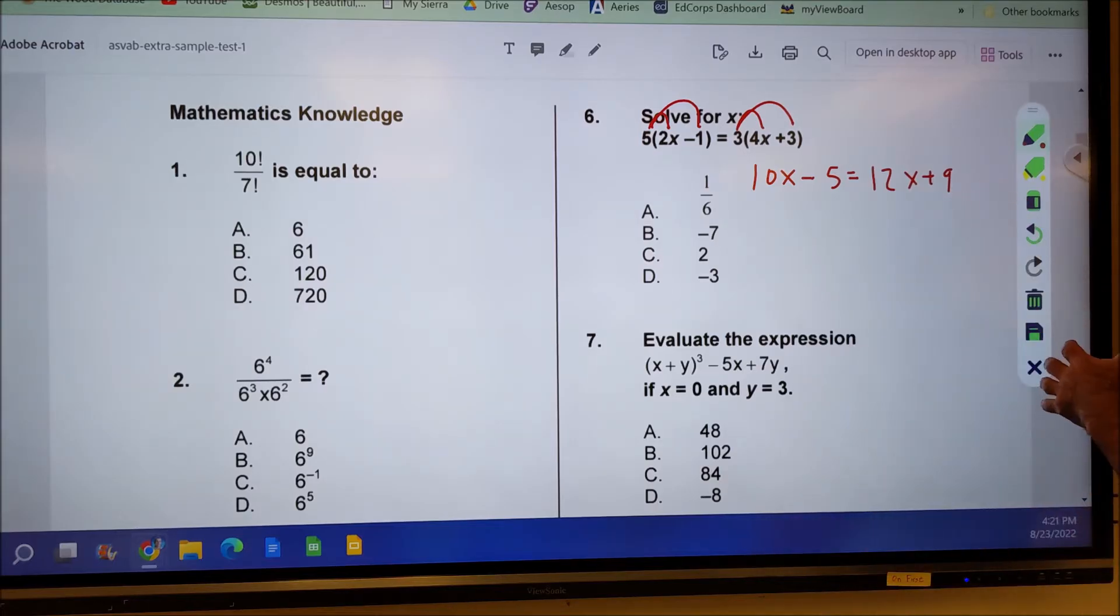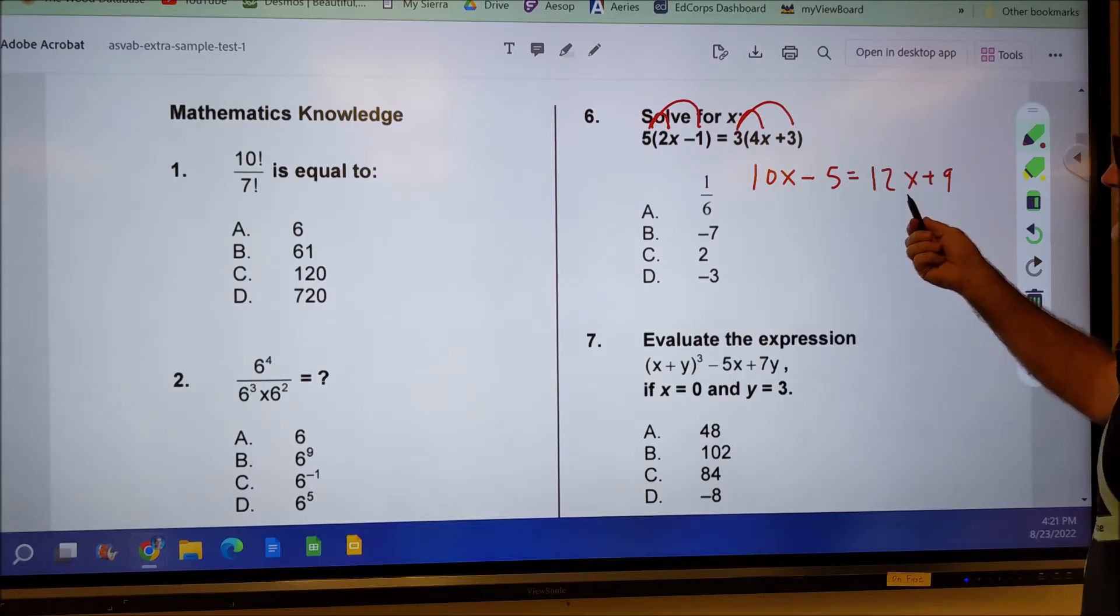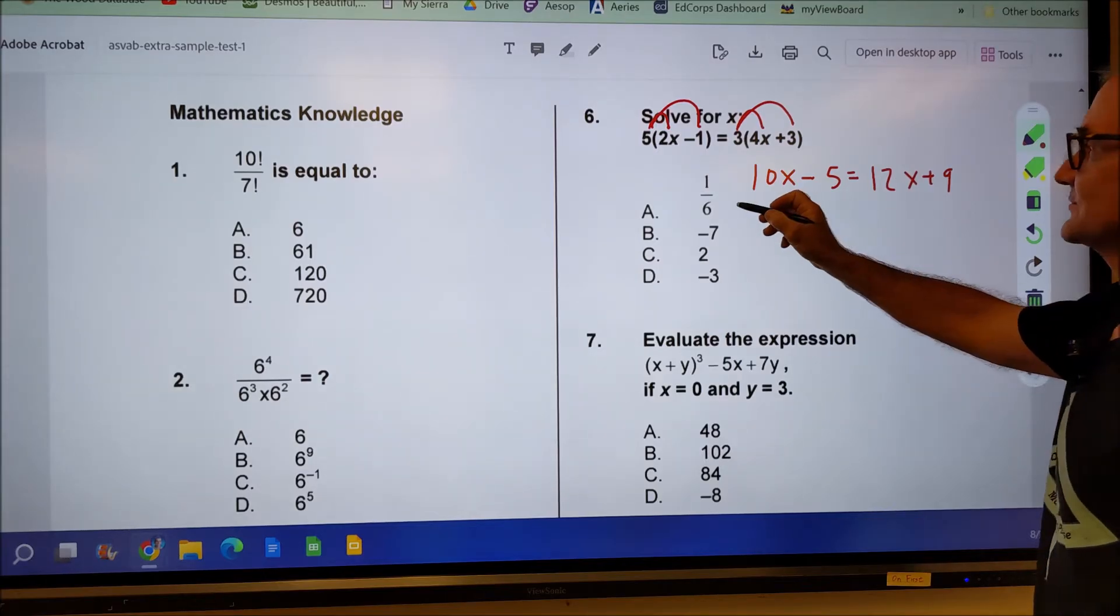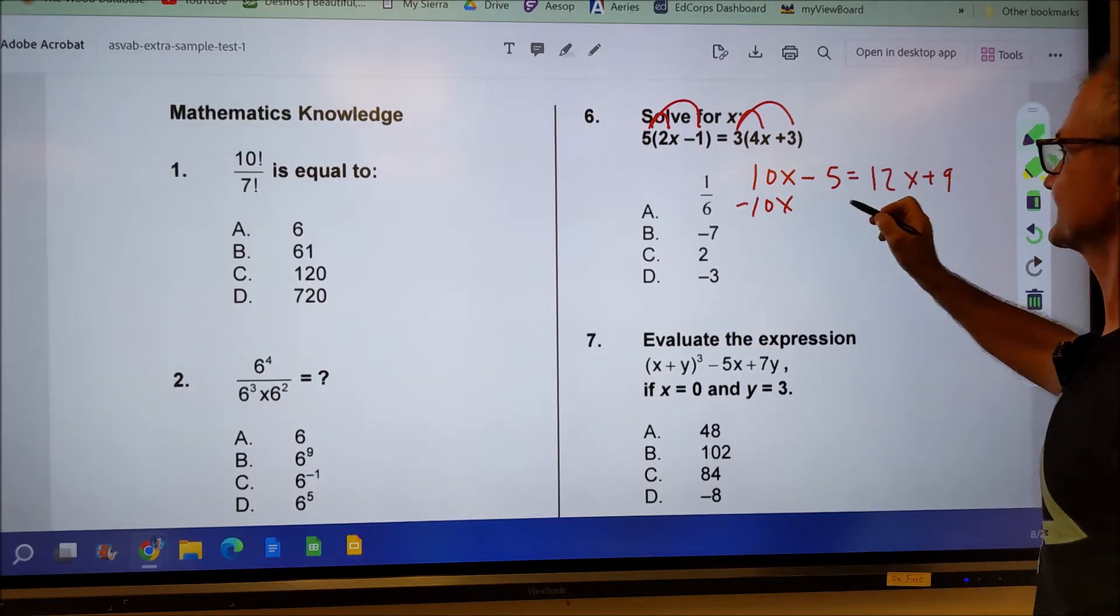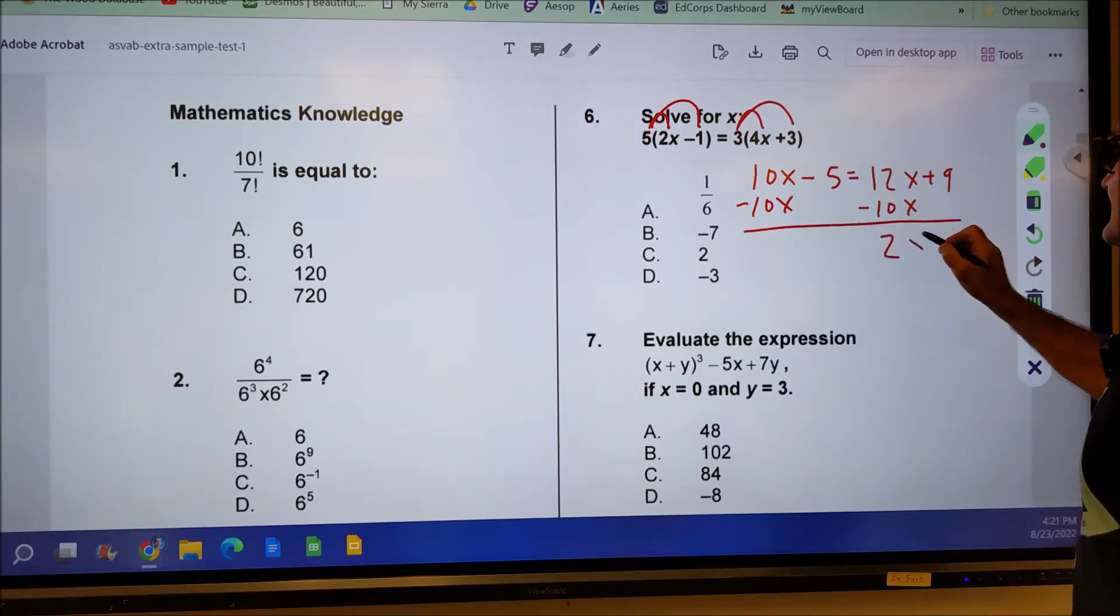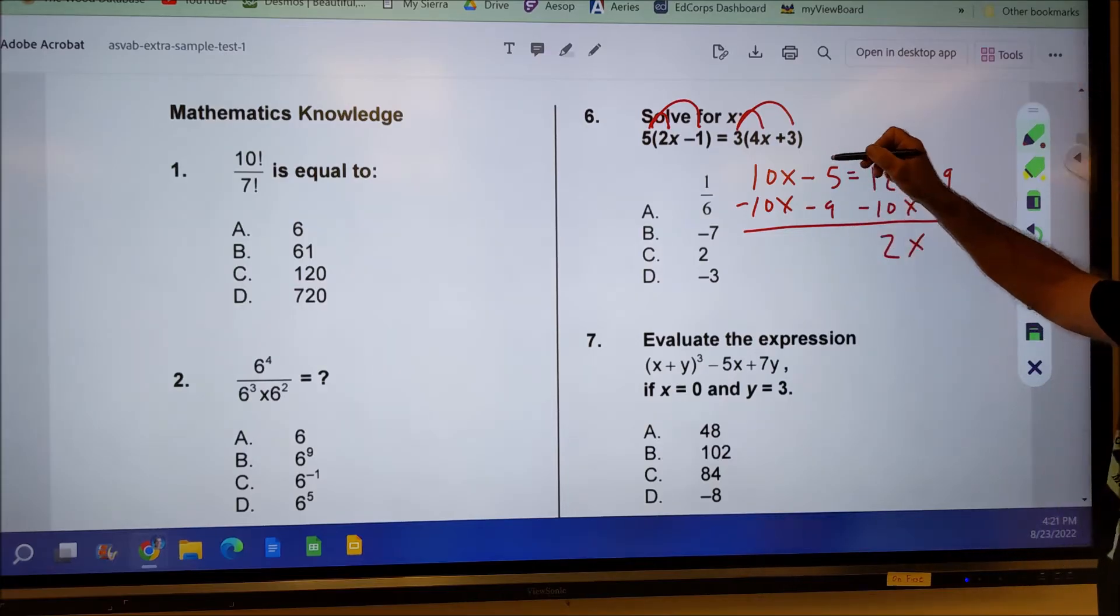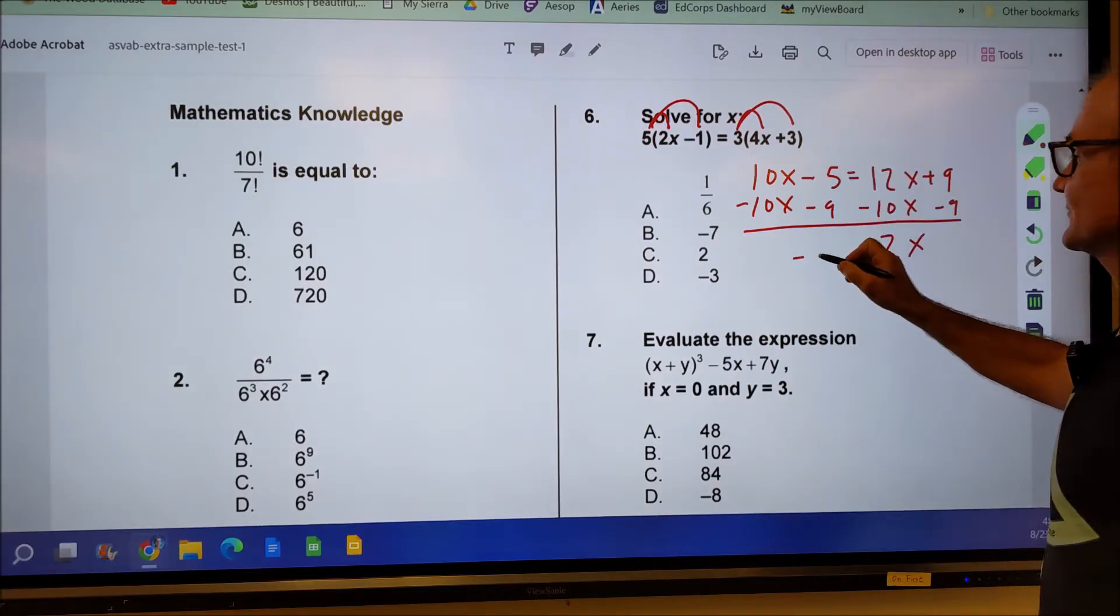I'm going to get all the X's on one side, all the numbers on the other side. You could do a lot of different ways. I kind of like to stick with a positive X. So I'm going to subtract 10X from both sides, giving me a 2X over here. And then I'm going to subtract nine from both sides to get negative five plus a negative nine is negative 14.